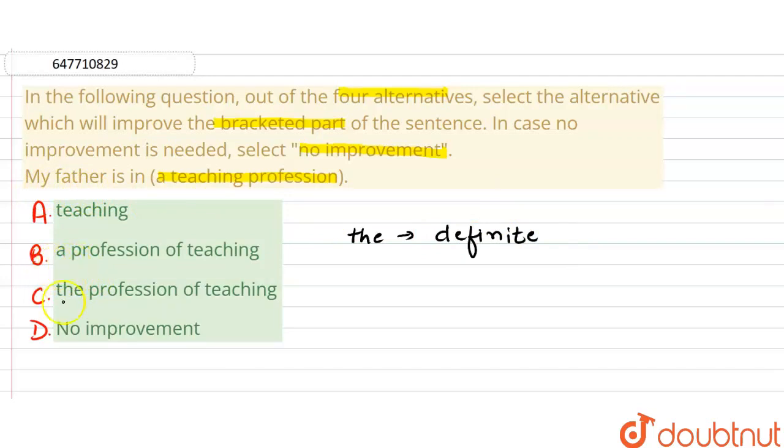So, we won't go for indefinite. We won't choose B option. We will choose C, that is 'the'. The is a definite article used for definite things, nouns, people, right? So, it should be 'in the'. What should come after 'the'? Noun comes after 'the'.